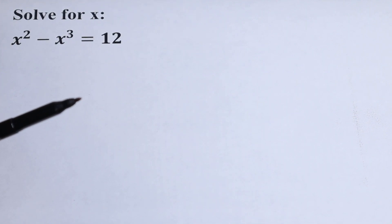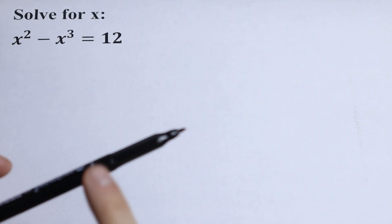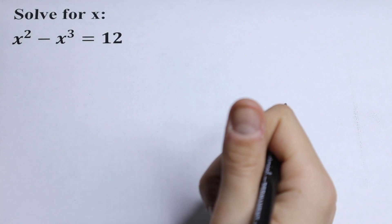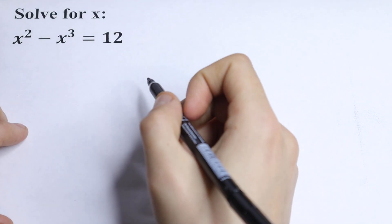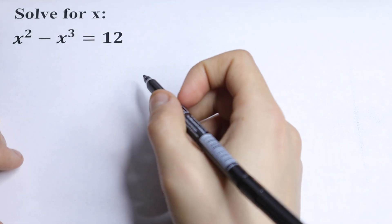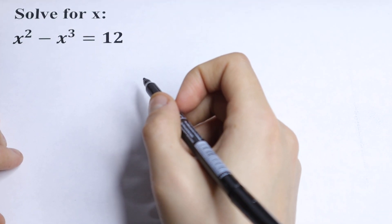Hello everyone, welcome back to MathMode. Here we have an interesting equation: x squared minus x cubed equals 12. How can you solve this?